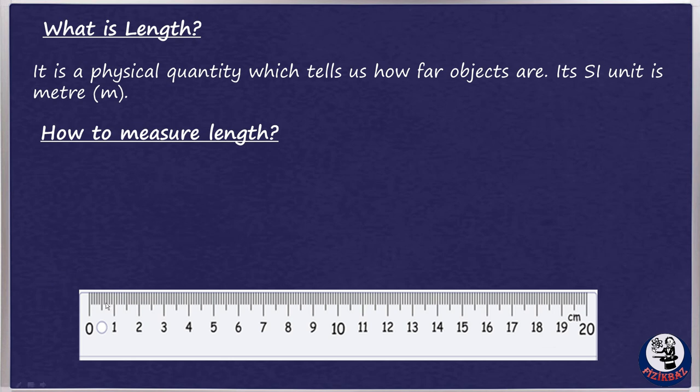Precision is simply the smallest unit, I mean minimum length, an instrument can measure. Like the ruler you see on the screen, it measures at least 0.1 cm or 1 mm. Range is the maximum length an instrument can measure. This ruler can measure a maximum of 20 cm. Hence, it is its range.